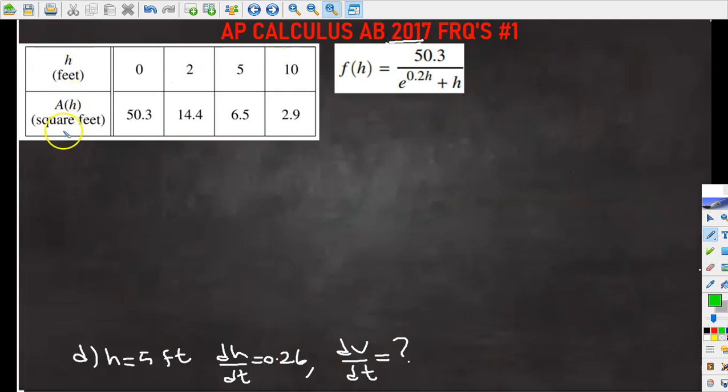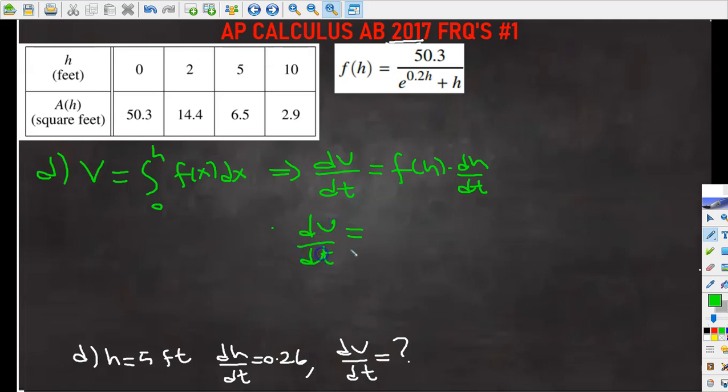So let's use green. So the volume of the water in the tank can be represented by volume equals from 0 height to until some height h, f of x dx. So if I differentiate both sides with respect to time, dV over dt, that's going to be equal to f of h times dh over dt. We already know dh over dt, which is 0.26.